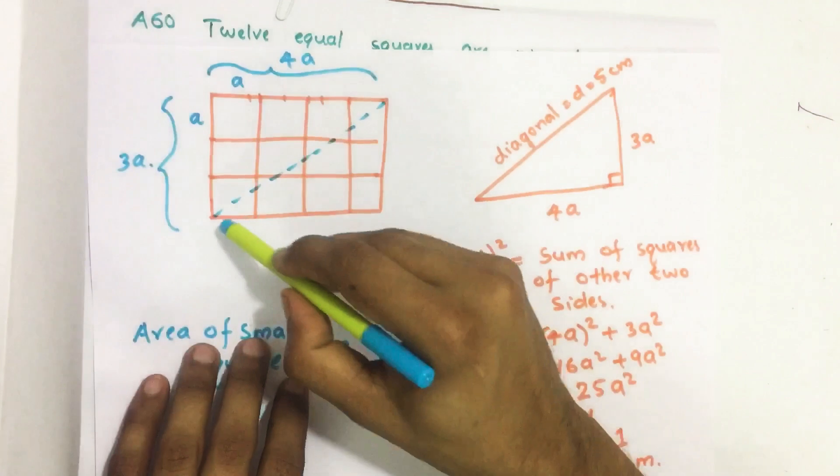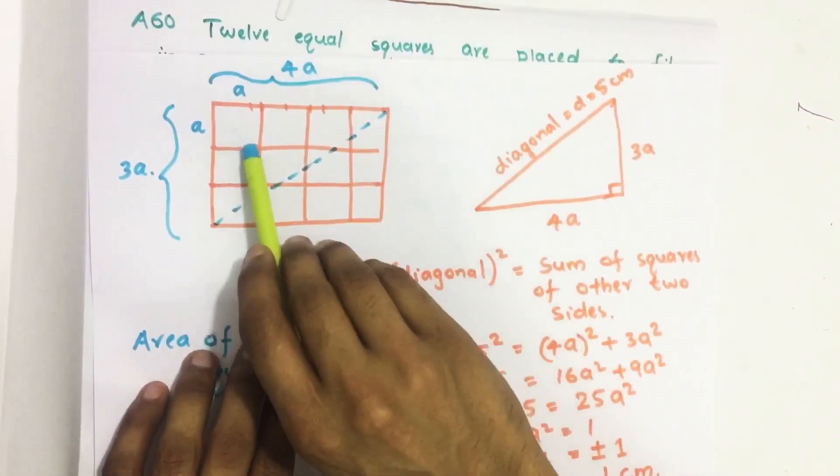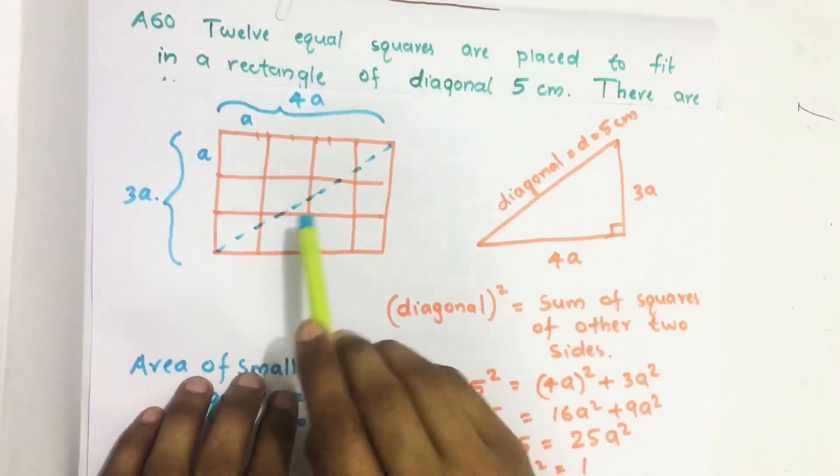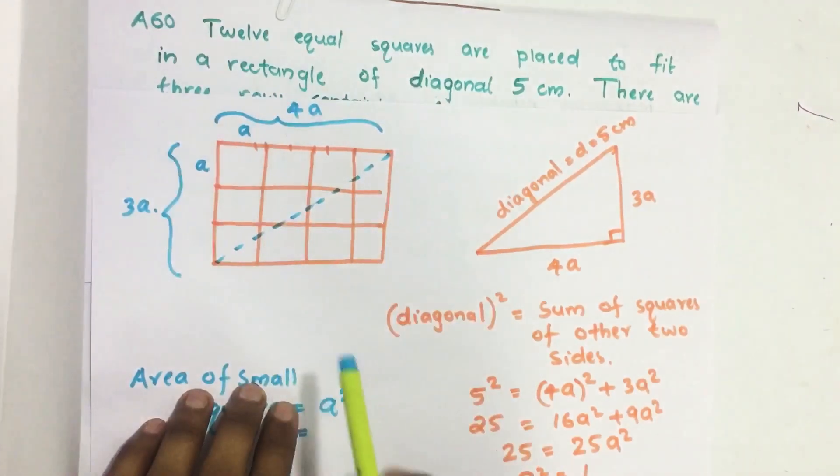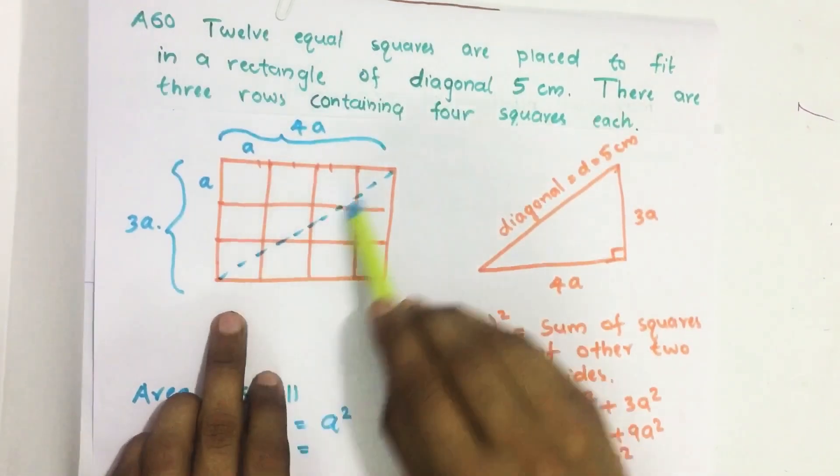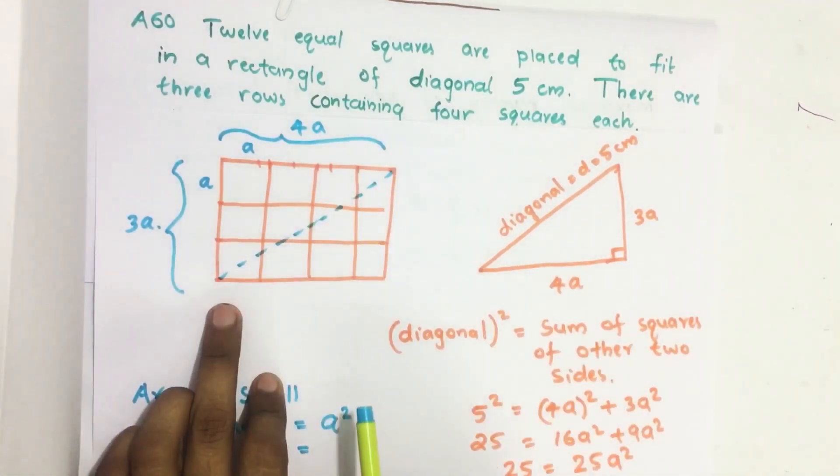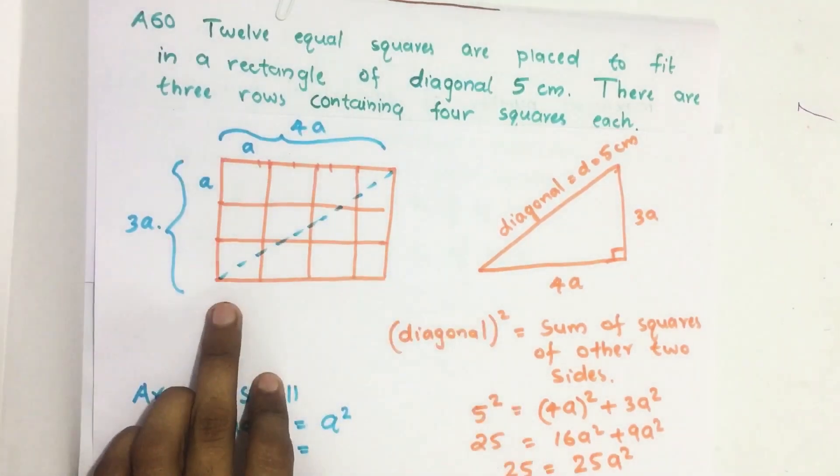So here there is a rectangle and 12 small equal squares are placed in this rectangle. In each row there are four squares and the diagonal of this big rectangle is 5 cm. Then what is the area of these small squares?